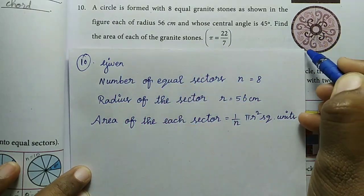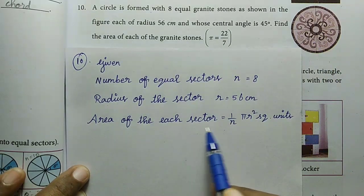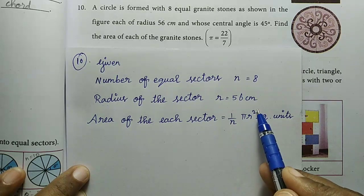So the value R is equal to 56 cm. Now we find area of each of the granite stones. So this is the cutting area we find. So the formula: area of each sector is equal to 1 divided by N into pi R square, square unit.